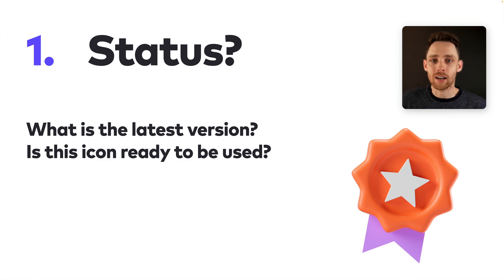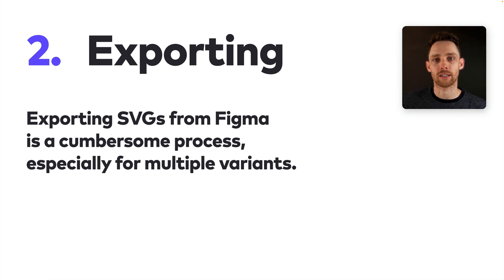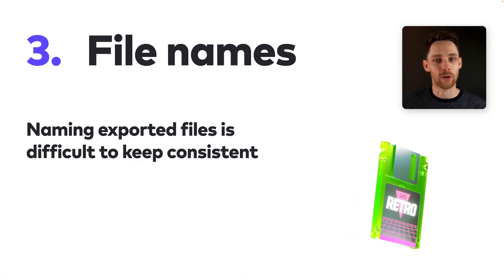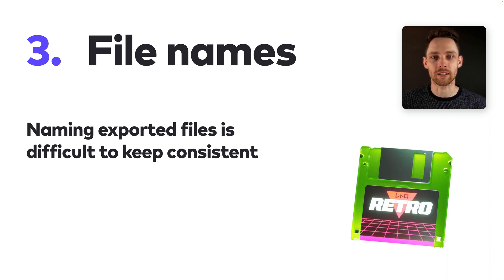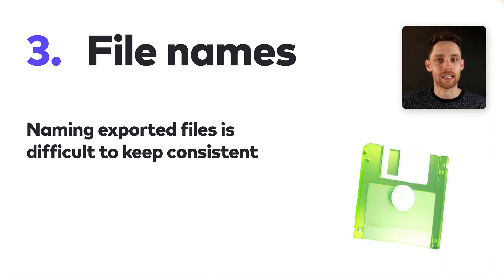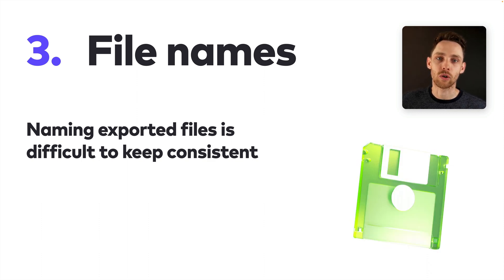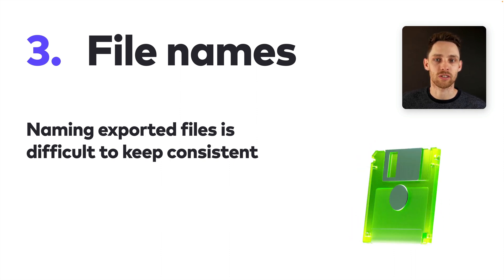Engineers would ask: can you just send me the icon I need for the feature I'm building? Exporting from Figma is an unnecessarily cumbersome process. When you have multiple asset variants like we do, it creates even more friction. Computers are made to do these repetitive tasks — not humans. And when you export, you likely need to tweak the file names. Keeping this consistent is a tedious task, and that's not even considering making a change to your naming convention — you'd have to go over your entire icon set again.